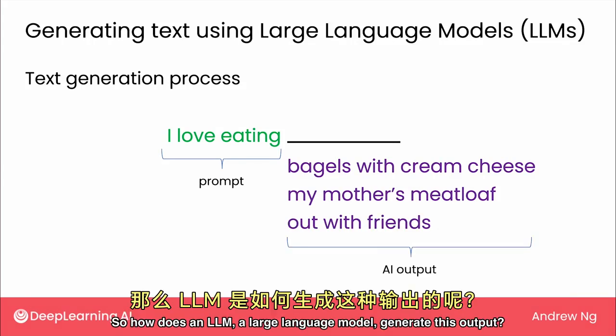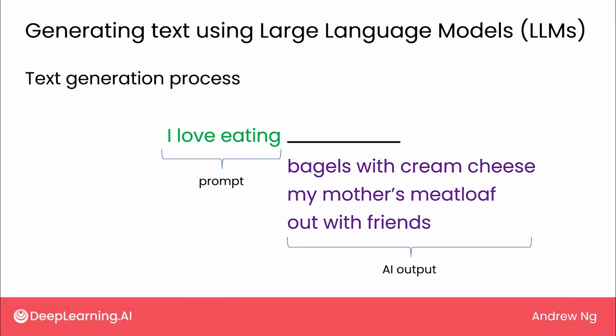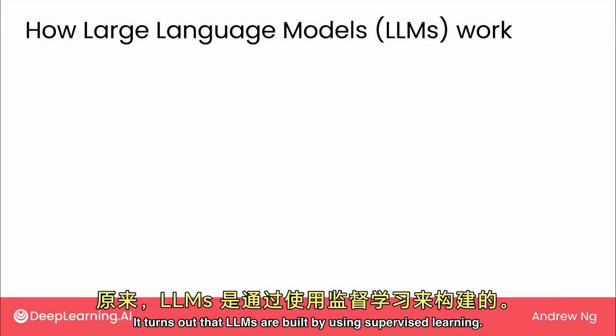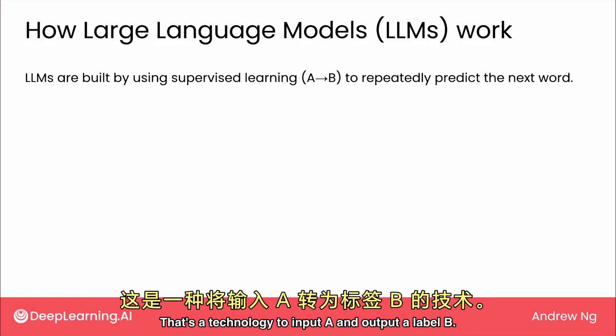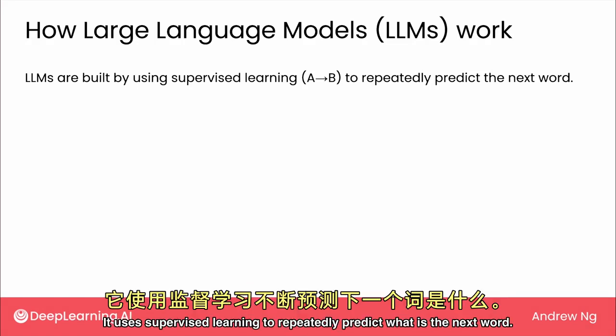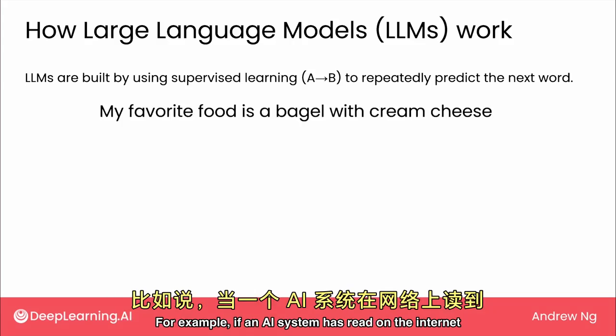So how does an LLM — a large language model — generate this output? It turns out that LLMs are built by using supervised learning, that's a technology to input A and output a label B. It uses supervised learning to repeatedly predict what is the next word.